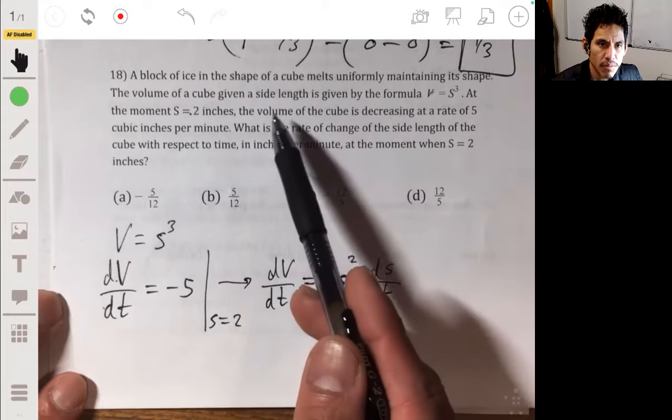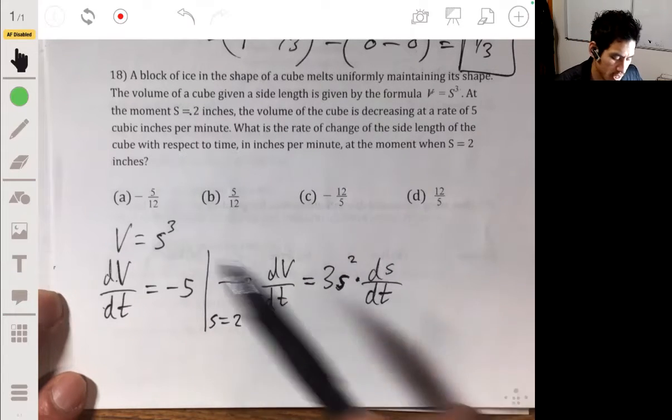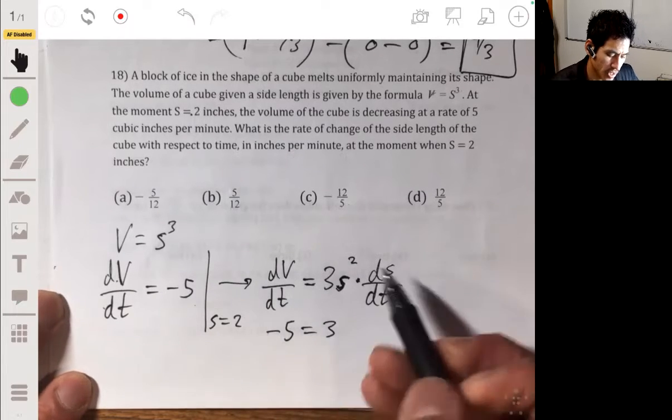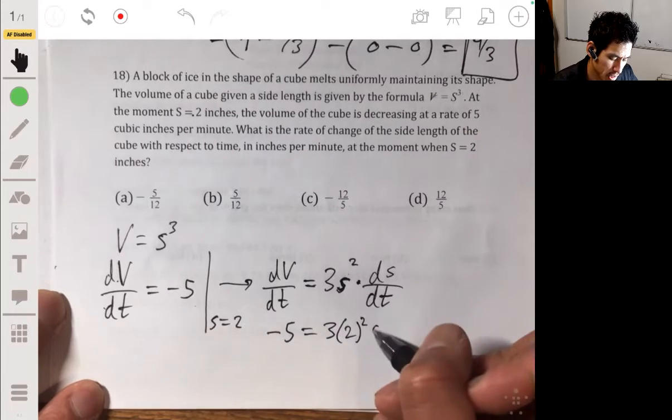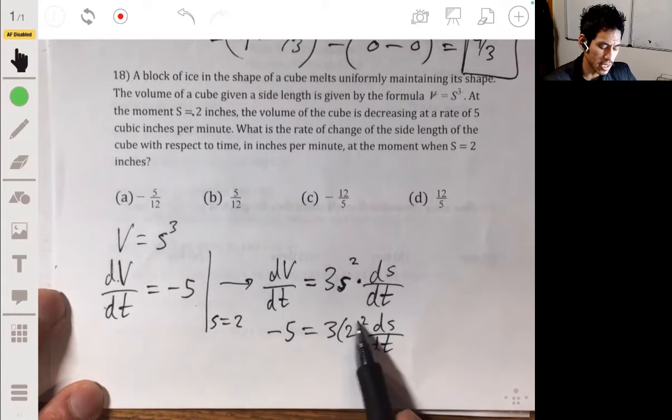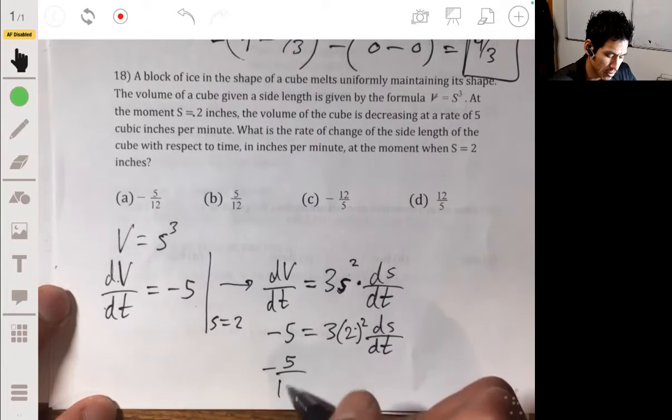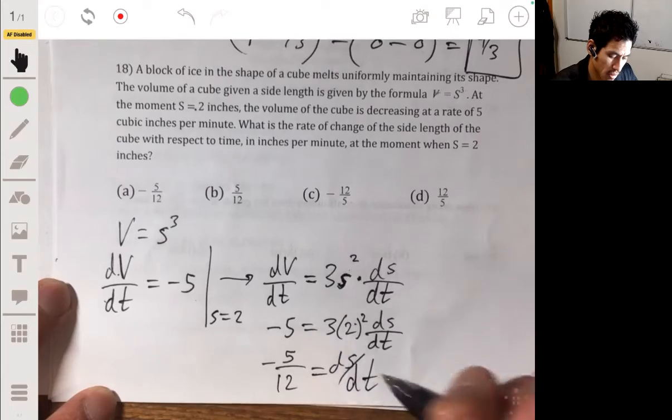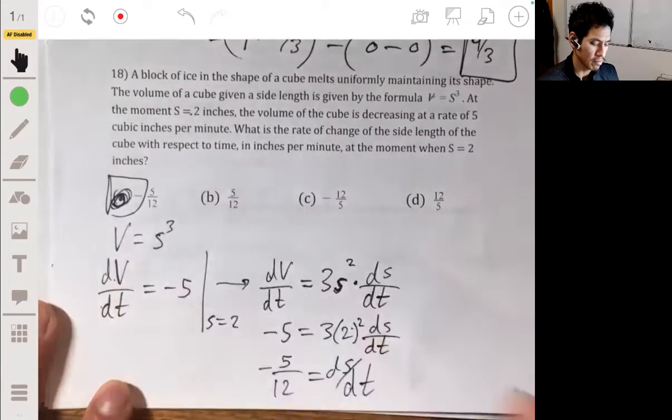So we are solving for dS/dt when dV/dt equals negative 5. So we said negative 5 equals 3, and when S equals 2, so we plug 2 into there. So 2 squared times dS/dt. And that's just 3 times 4, so it's 12. So then this is negative 5 over 12. This is equal to dS/dt. And our answer will be A.